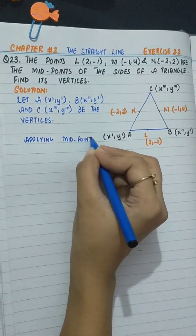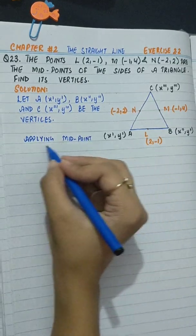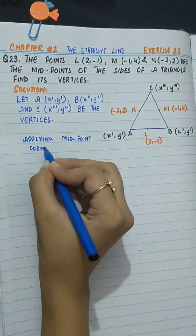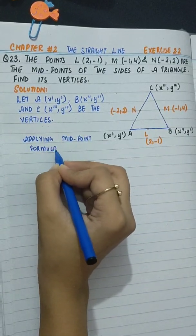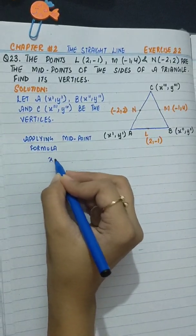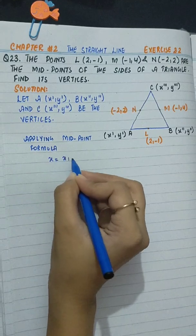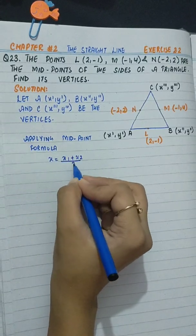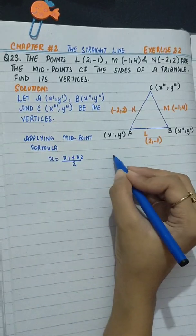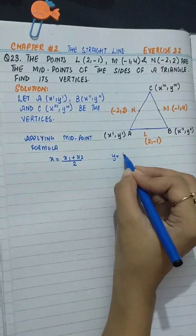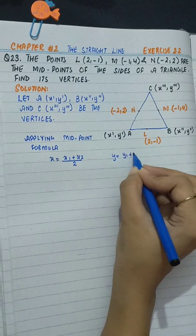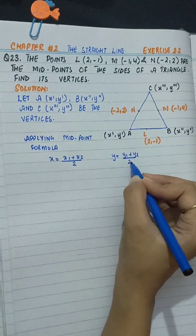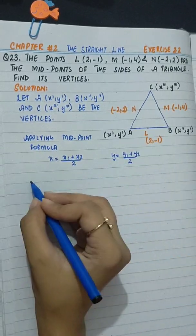Applying the midpoint formula: x equals x1 plus x2 divided by 2, and y equals y1 plus y2 divided by 2.